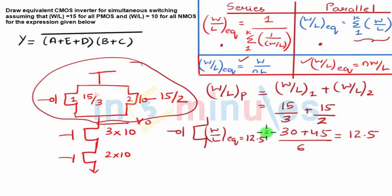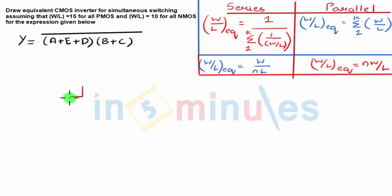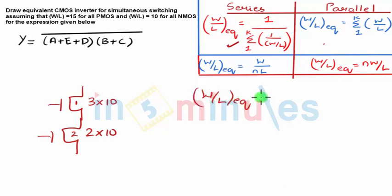Now let's quickly go ahead and see the corresponding NMOS equivalent here. I have two transistors in series: NMOS is nothing but 3 times 10 into 2 times 10. So we will be following this formula for series transistors.